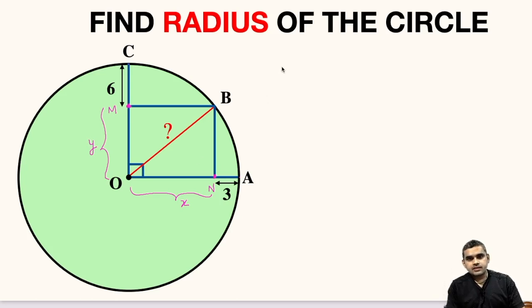So you can see that OC and OA, they are equal. Why? Because both of them are the radius of the circle. What is the length of OC? We can write it as 6 plus Y equals, what is the measure of OA? This is X plus 3.